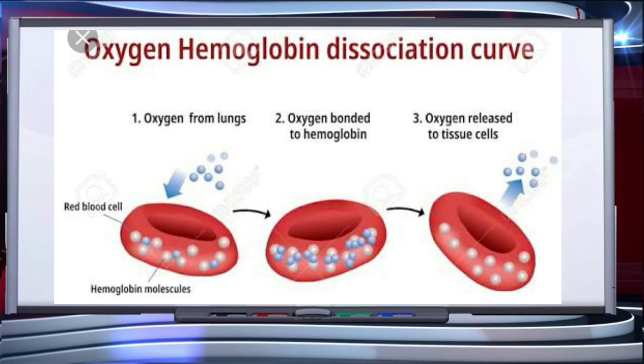Every 100 ml of oxygenated blood can deliver around 5 ml of oxygen to the tissues under normal physiological conditions.